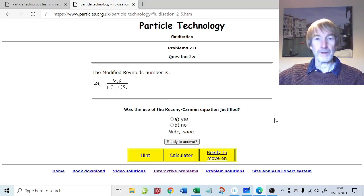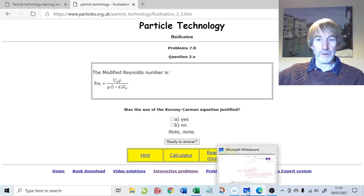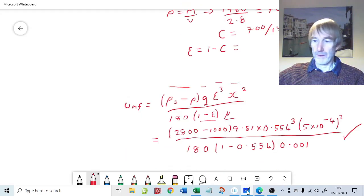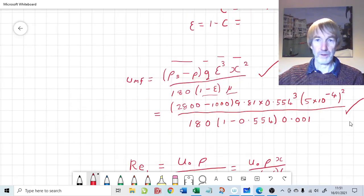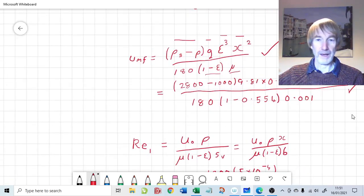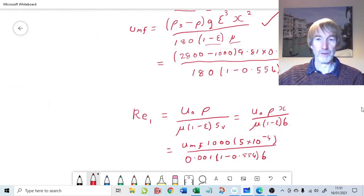We use the Cousini-Carmen then, in order to calculate the minimum fluidizing velocity. How do we use the Cousini-Carmen equation? Well, it's because this equation here was derived via the Cousini-Carmen equation. So we need to check that the Cousini-Carmen equation is valid. It's a laminar flow equation. We need streamlined flow of the fluid inside the porous medium. And to do that, we need the modified Reynolds number.